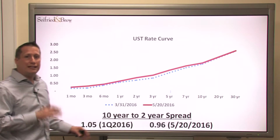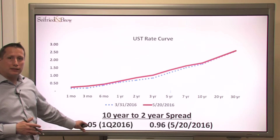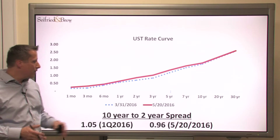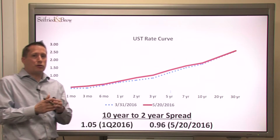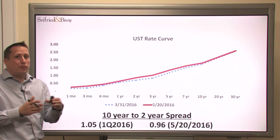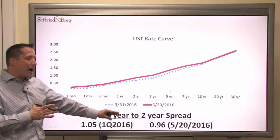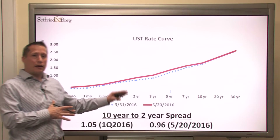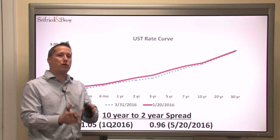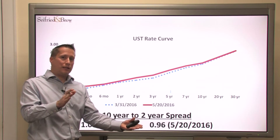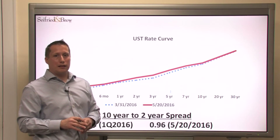Overall, the spread between the 10-year and 2-year Treasuries has contracted. In the first quarter of 2016, it was 1.05; currently as of Friday it was 0.96 — a little bit of contraction. If we look back to the first quarter of 2015, it was much wider. So the question is how is this going to impact our net interest margins? Intuitively, we're going to continue to see small compression in the net interest margin coming into the second quarter. We'll see an increase in the overall level of net interest income, but that compression on the net interest margin is going to take place.